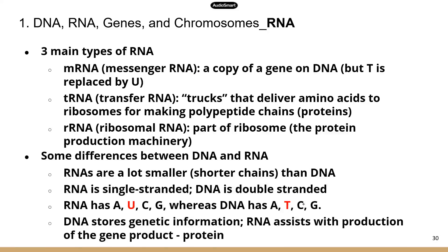RNA is a very interesting molecule. There are three types of RNA, and you need to know the function for each. mRNA is messenger RNA — that's a copy of a gene from DNA, but in RNA we don't have T's; instead we have U's. RNAs are normally a lot smaller than DNA. mRNA is normally the biggest among all the RNAs, but it's only about the size of one gene on a DNA molecule. Remember, one DNA molecule may carry hundreds or thousands of genes, so mRNA is really small.